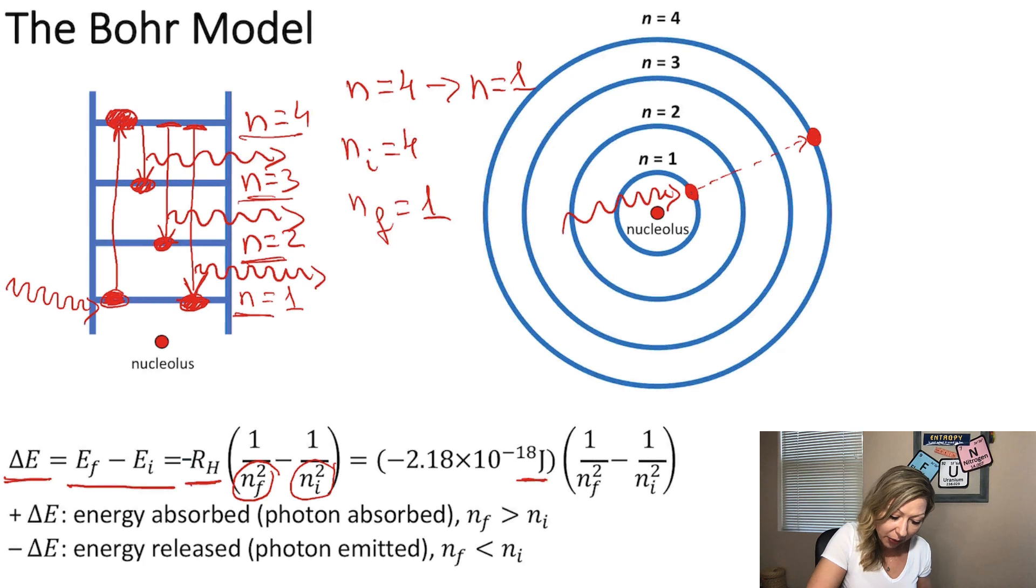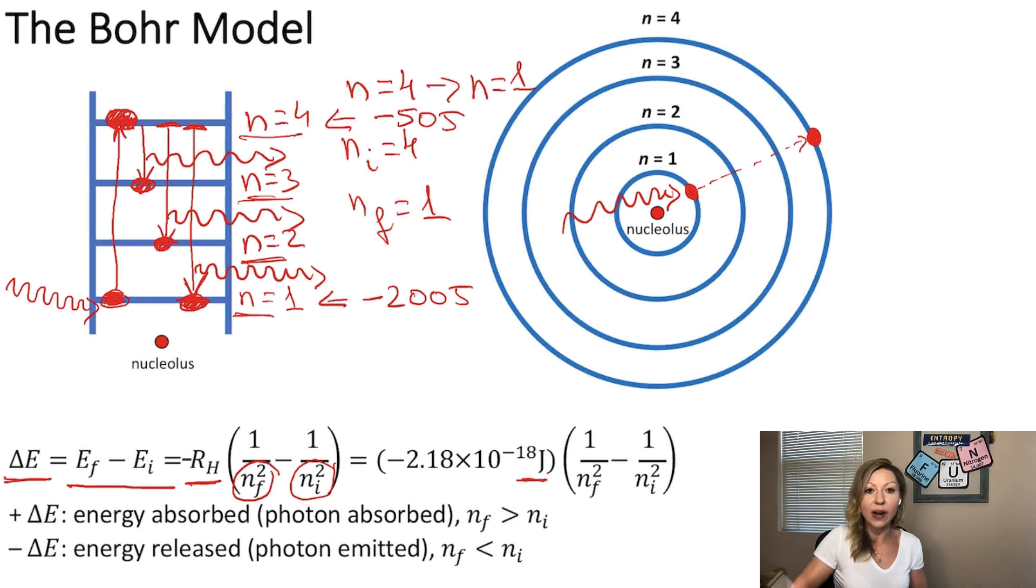So for example, at N equals 1, we can have an energy of minus 200 joules. And at N equals 4, we can have an energy of minus 50 joules. So the energy increases as we go up and up and up on these orbits. Now, keep in mind that in these figures, the orbits are spaced equally from each other. But in reality, the spacing becomes smaller and smaller between all orbits as you increase the energy.